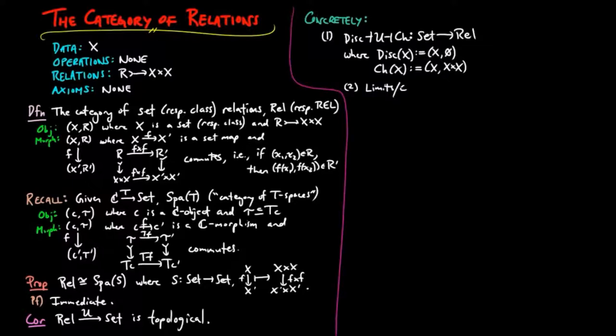Two: limits and colimits can be calculated in set. If we're given a diagram D in the category of relations, where we have (Xi, Ri) is set to be D(i), then the limit of D is the limit of Xi calculated in set L.